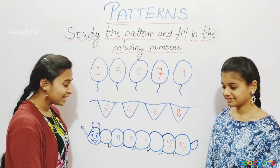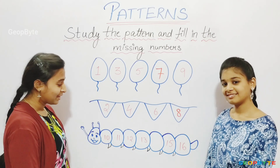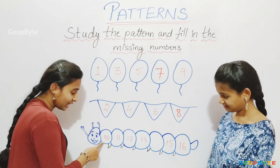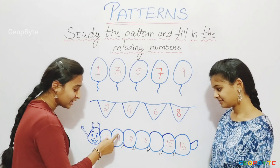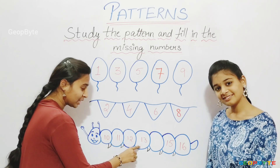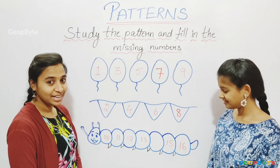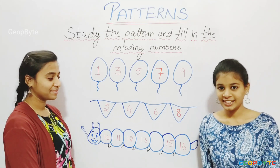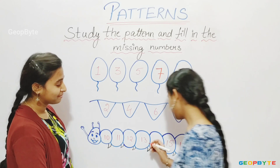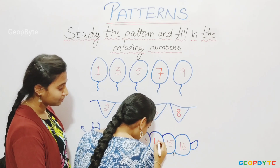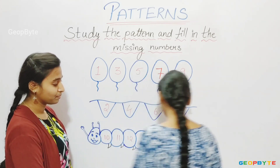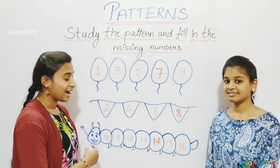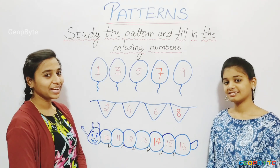Now see this caterpillar — there are few numbers inside: 10, 11, 12, 13, blank, 15. After 13, what comes? 14. Let us write 14. Then 15, 16 — our sequence is correct.